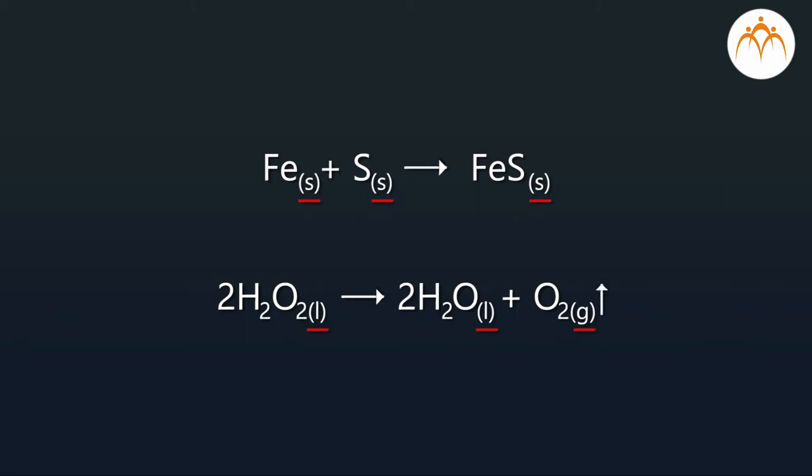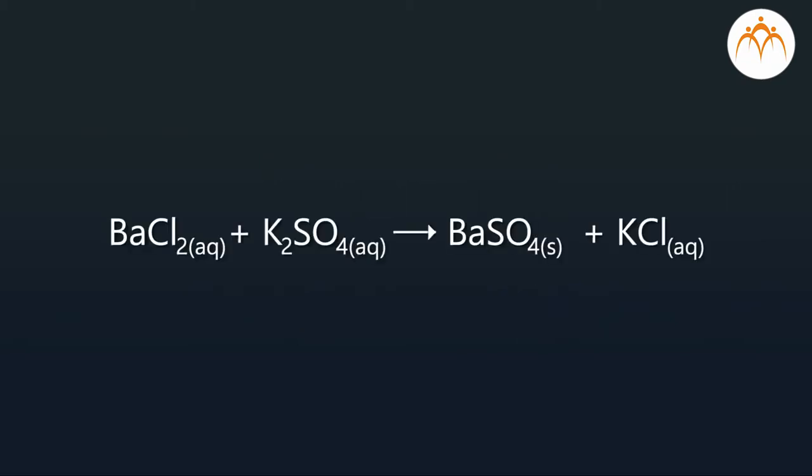Gaseous products can be indicated by an upward arrow. Insoluble solid products are called precipitates, indicated by a downward arrow. When reactants and products are in water as a solution, it's called an aqueous solution, indicated by the letters AQ in brackets after their formula.